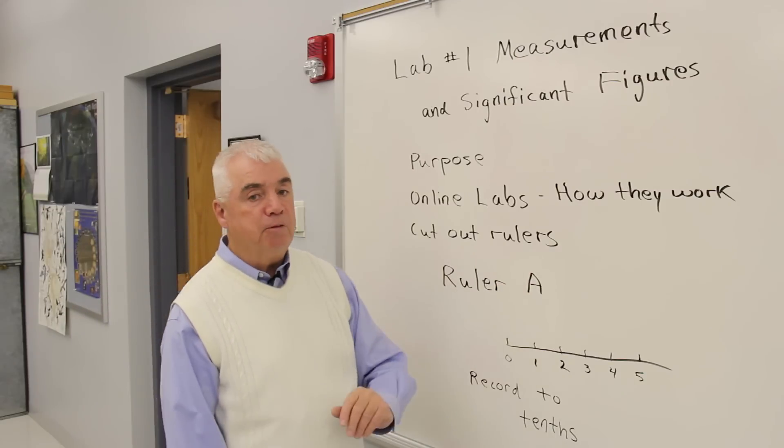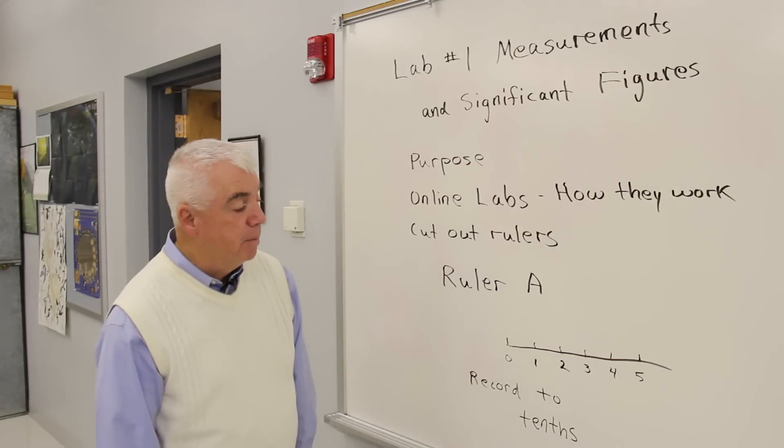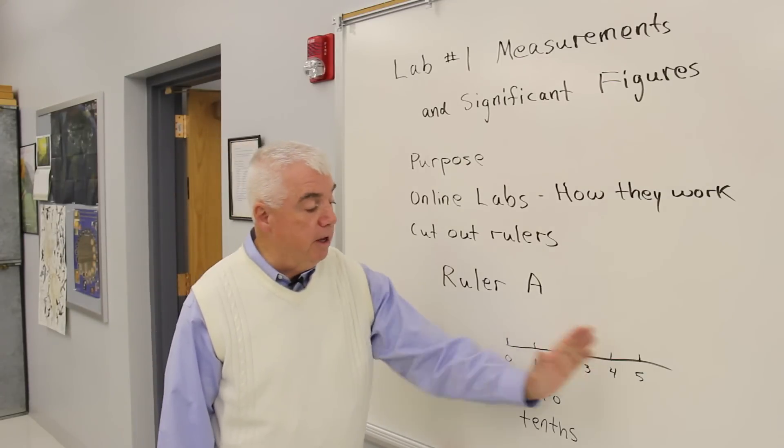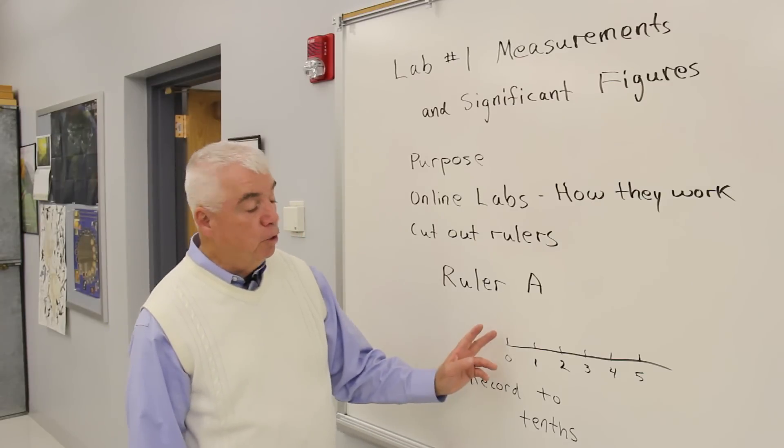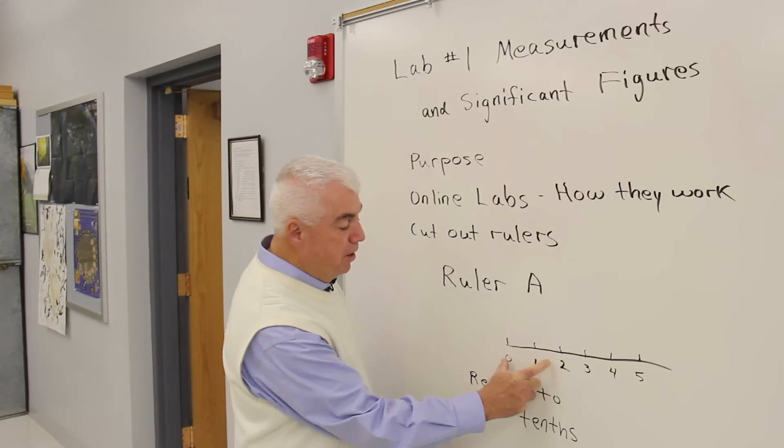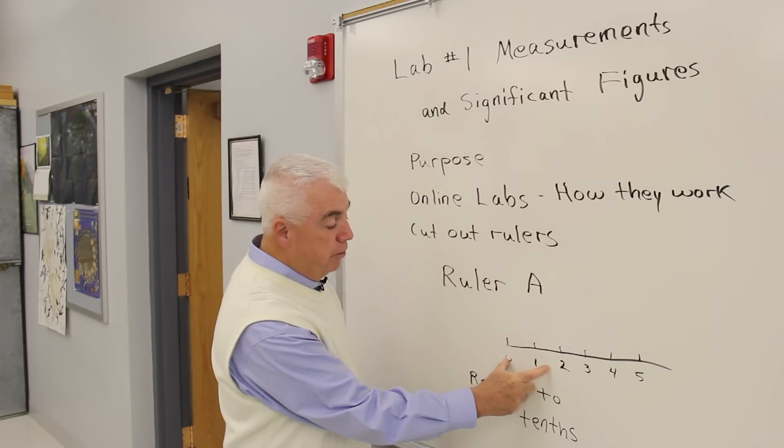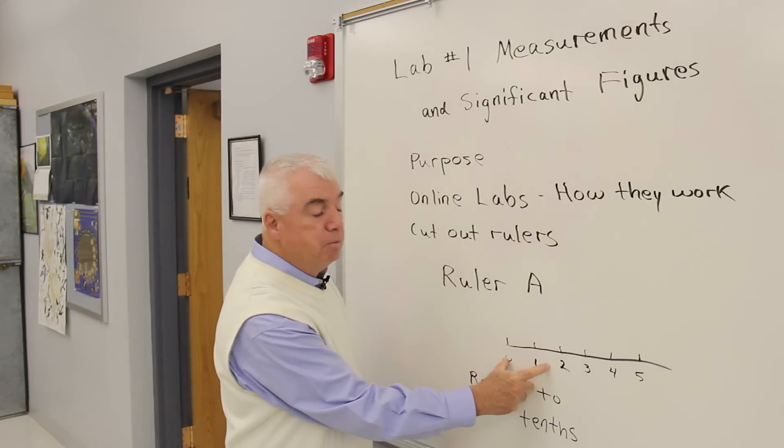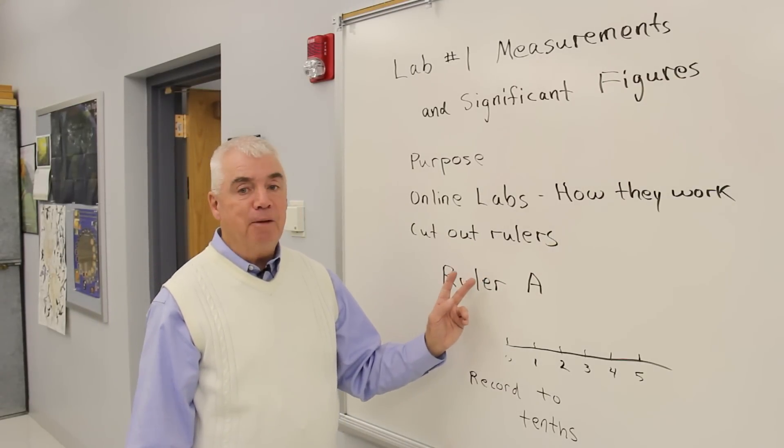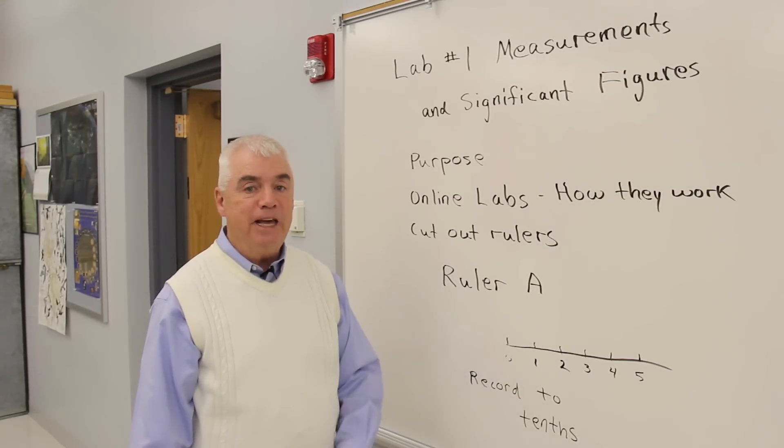We use ruler A in Part A of the experiment, and ruler A has markings to the ones. One general principle of significant figures is that whenever you use a measuring device, you can estimate one more place than the number of markings. So for example, if I had something that was this long, well I know I'm sure of the one and it's not quite over there to the two, I can estimate maybe it's 1.5 or 1.4, something like that. In other words, every time you take a measurement with ruler A, you should be recording one more place to the tenths.